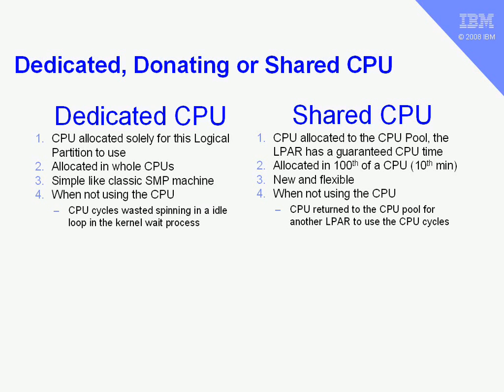In a dedicated CPU partition, when we're not actually using a CPU, it just wastes CPU cycles spinning in an idle loop — it's in a process called 'wait'. If you use PS minus K, you can actually see these wait processes; normally they're hidden from you. In a shared CPU case, when we're not using all the time we've been allocated, the CPUs are yielded and given back to the pool, and those CPUs can go and help out another logical partition that does have work to do.